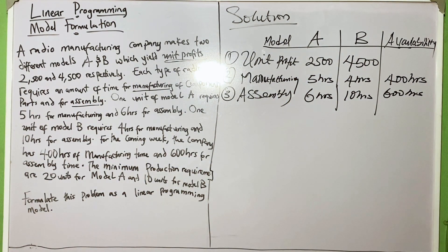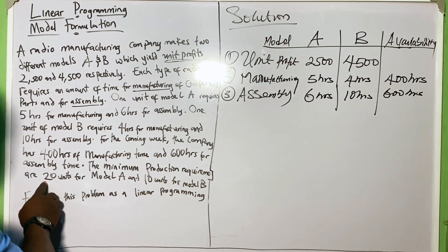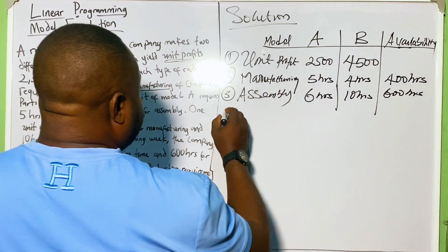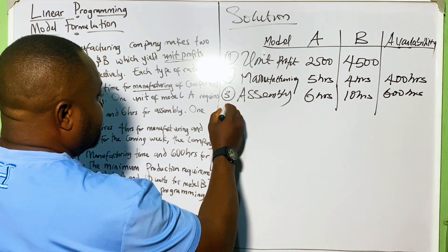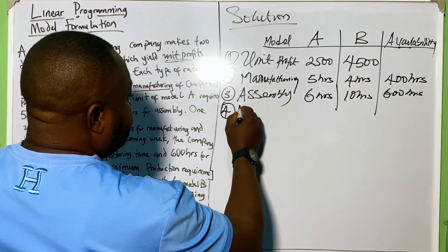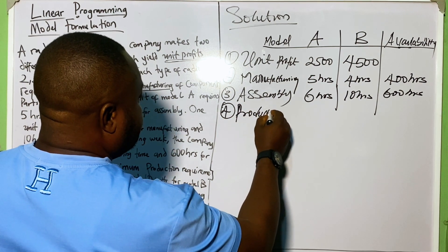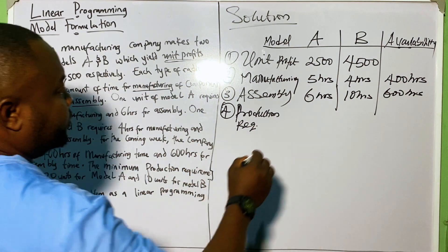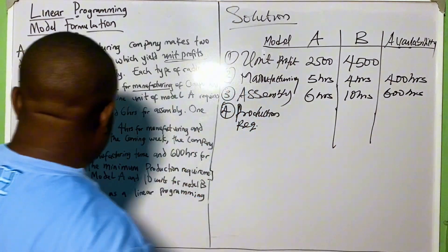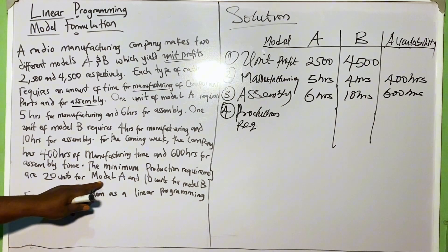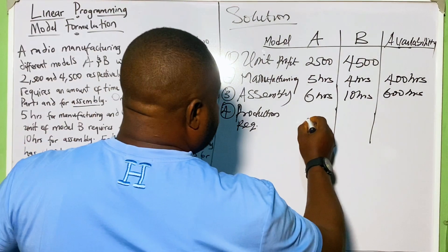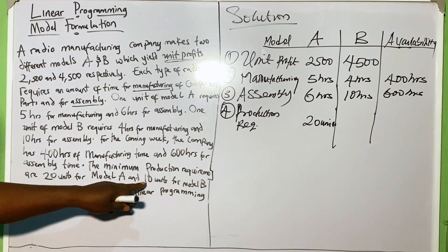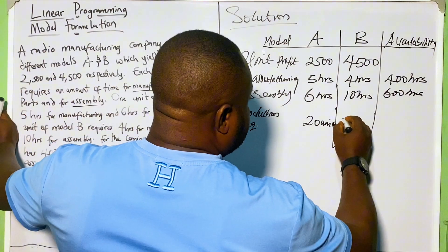Another item is the minimum production requirements: 20 units for model A and 10 units for model B. So we have another element that will be part of the structural constraints, which is the production requirements. For model A we have 20 units, and for model B we have 10 units.